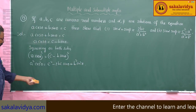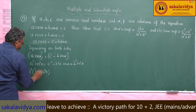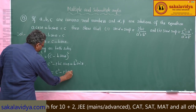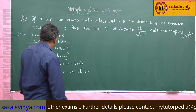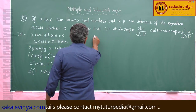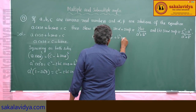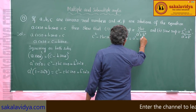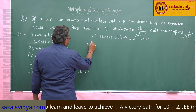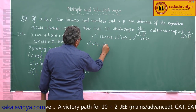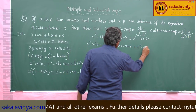Now we can change cos²θ in terms of sin: A²(1 minus sin²θ) equals C² minus 2BC sinθ plus B² sin²θ. Rearranging: A² sin²θ plus B² sin²θ minus 2BC sinθ plus C² minus A² equals 0.